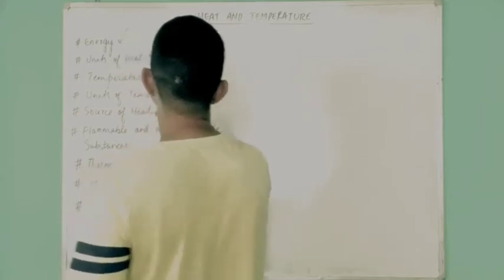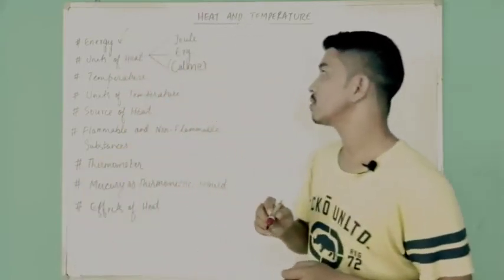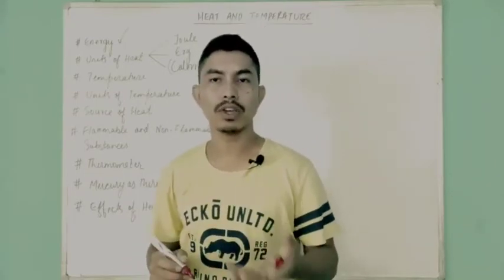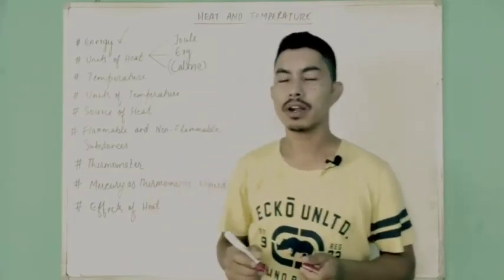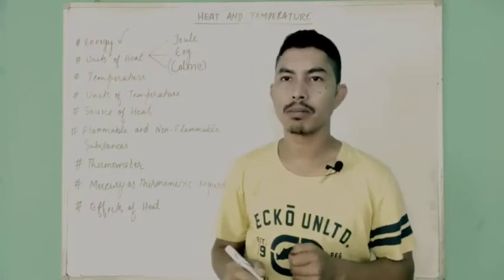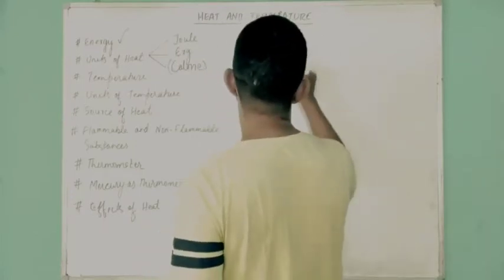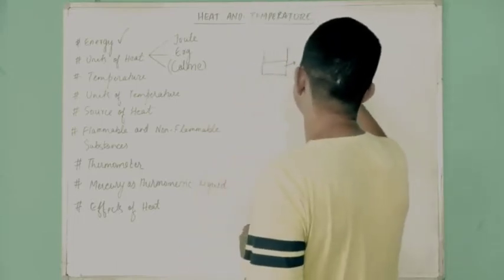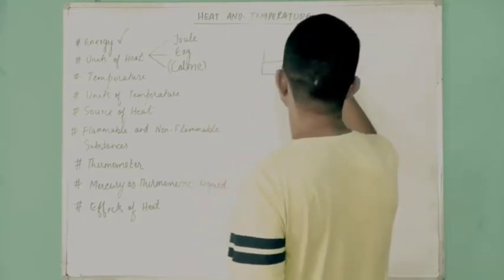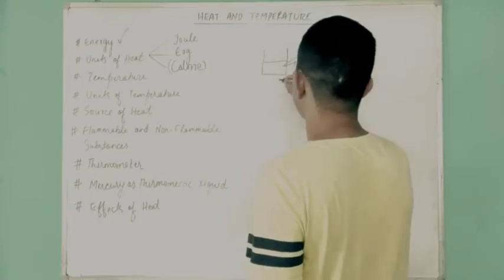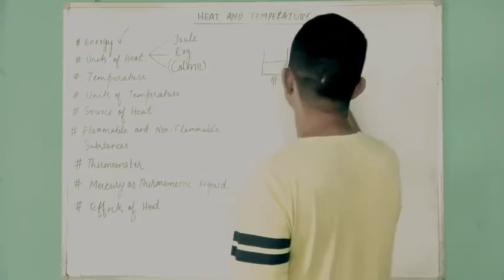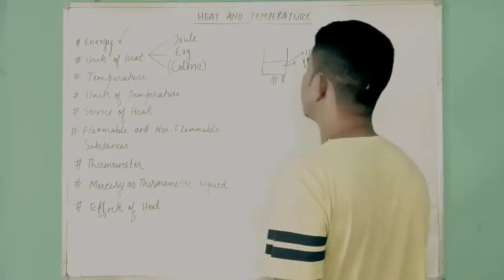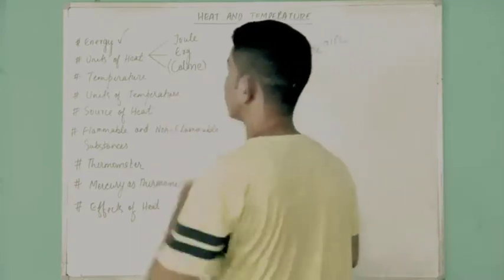One calorie of heat is the amount of heat energy required to raise the temperature of water by one degree centigrade. For example, if you have one gram of water at 10 degrees centigrade and you heat it until it reaches 11 degrees centigrade, the amount of heat supplied in doing so is known as one calorie.